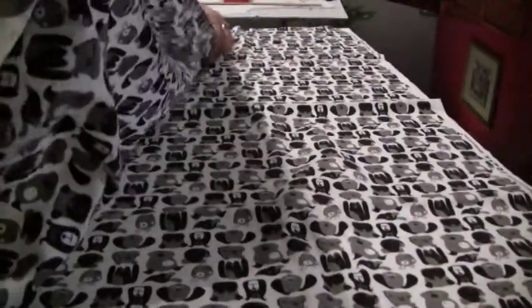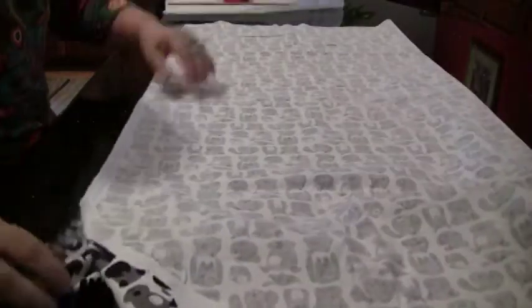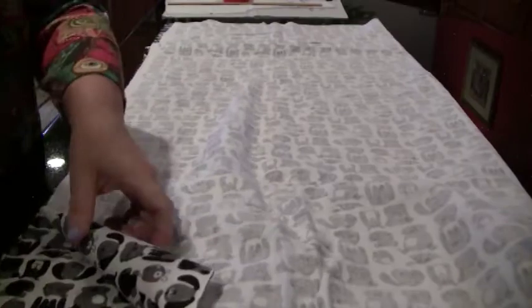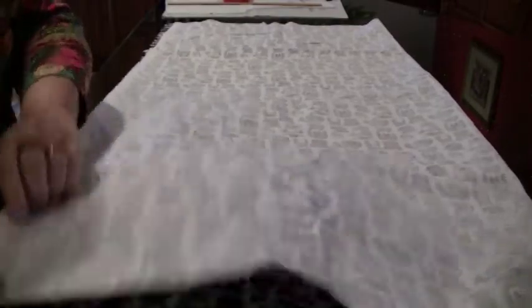So to begin, you want to take the fabric and put the right sides on the inside. So you will flip your fabric so that the right sides are on the inside. Then you are going to take your fabric, lay it down on the table, and match up the selvages.